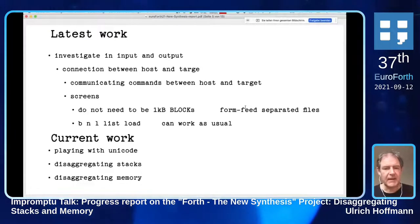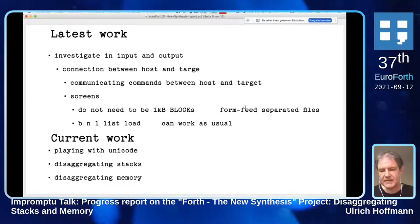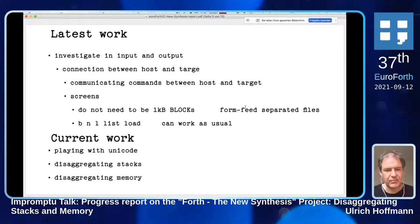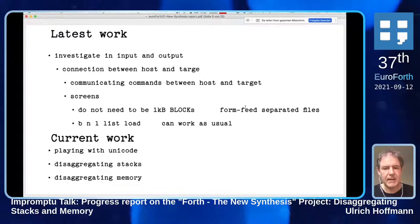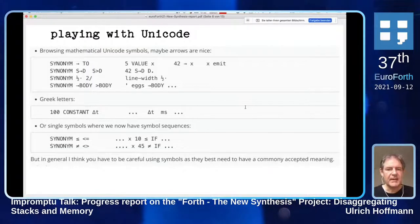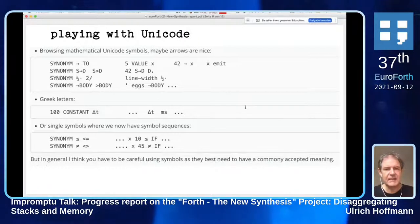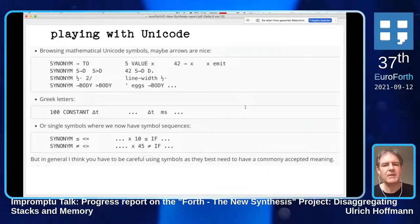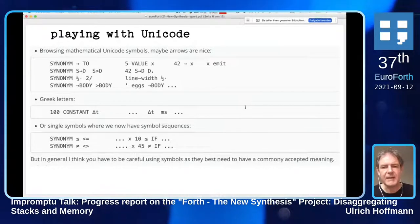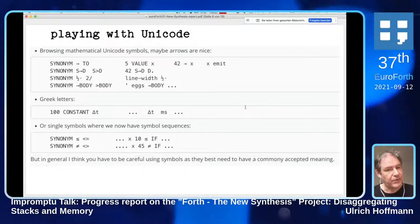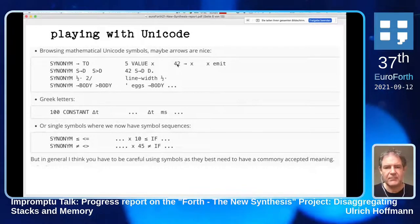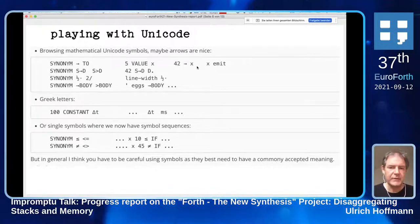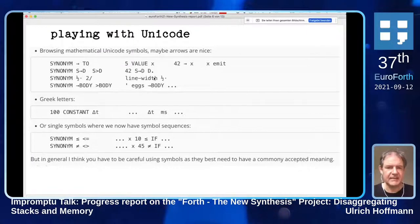I want to talk today about current work: playing with Unicode. I hope Nick is still with us so we can look at the examples I came up with. There's also disaggregating stacks and memory to get some more insight. In his talk, Nick said we can define Unicode names. I need to play around with it - I can only type the appropriate letters there. I've been thinking about what would be beneficial - maybe an arrow, so that we can write 42 to X, for example, instead of '42 to x'.